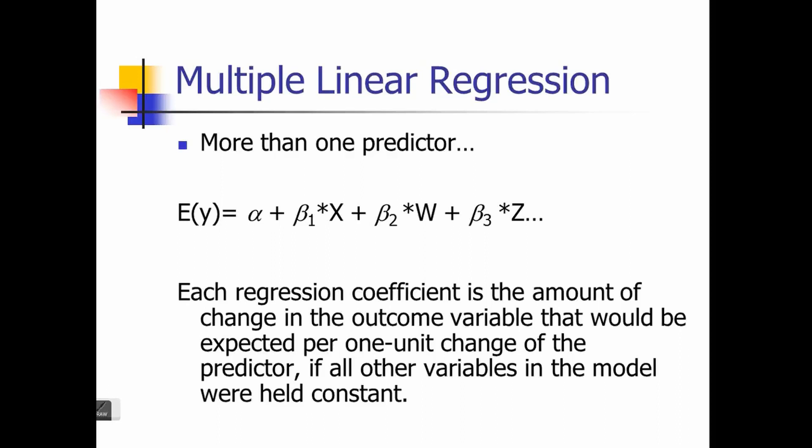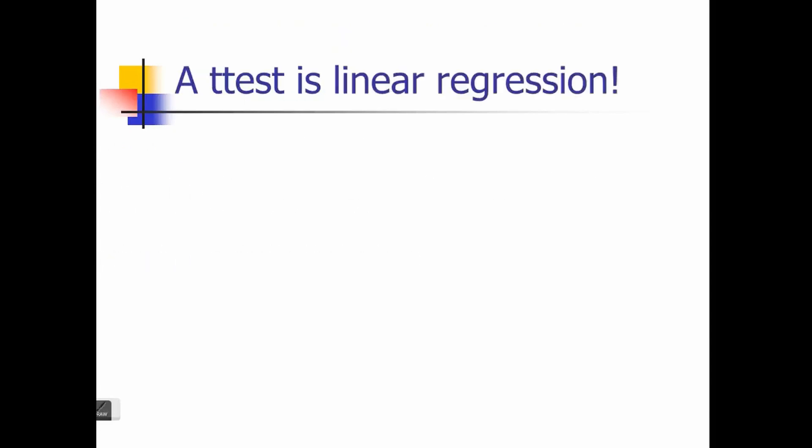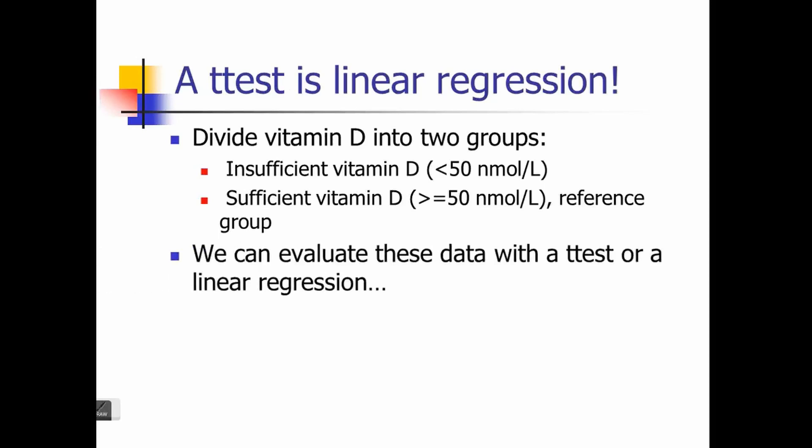In multiple linear regression, each regression coefficient is the amount of change in the outcome variable expected for one unit change in the predictor if all other variables in the model are held constant. This is a slight deviation from simple linear regression. To interpret beta 1, you need to keep every other variable constant. You cannot increase variables at the same time. If you do not keep them constant, they will be somewhat correlated and that will create a problem for linear regression interpretation.